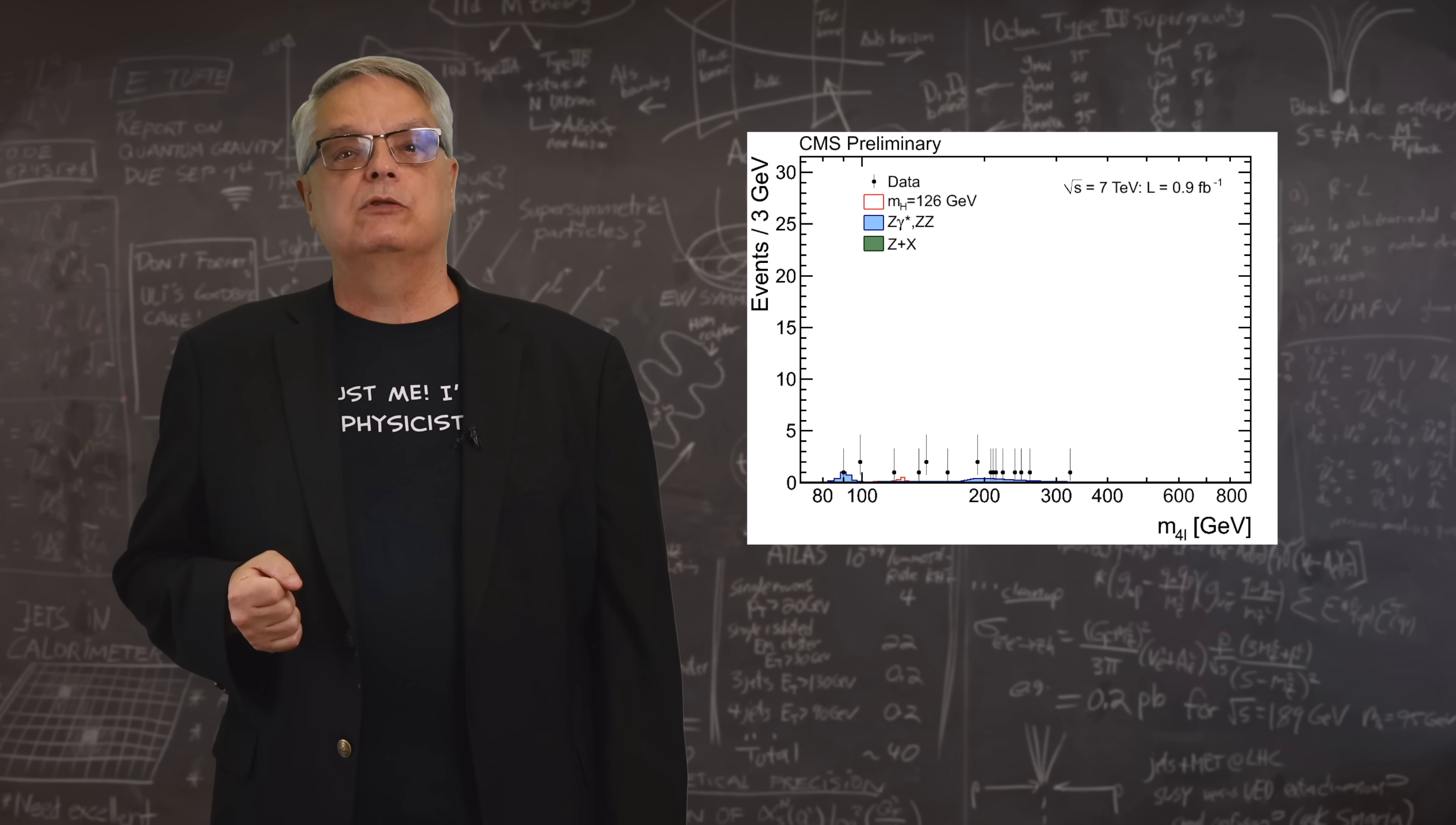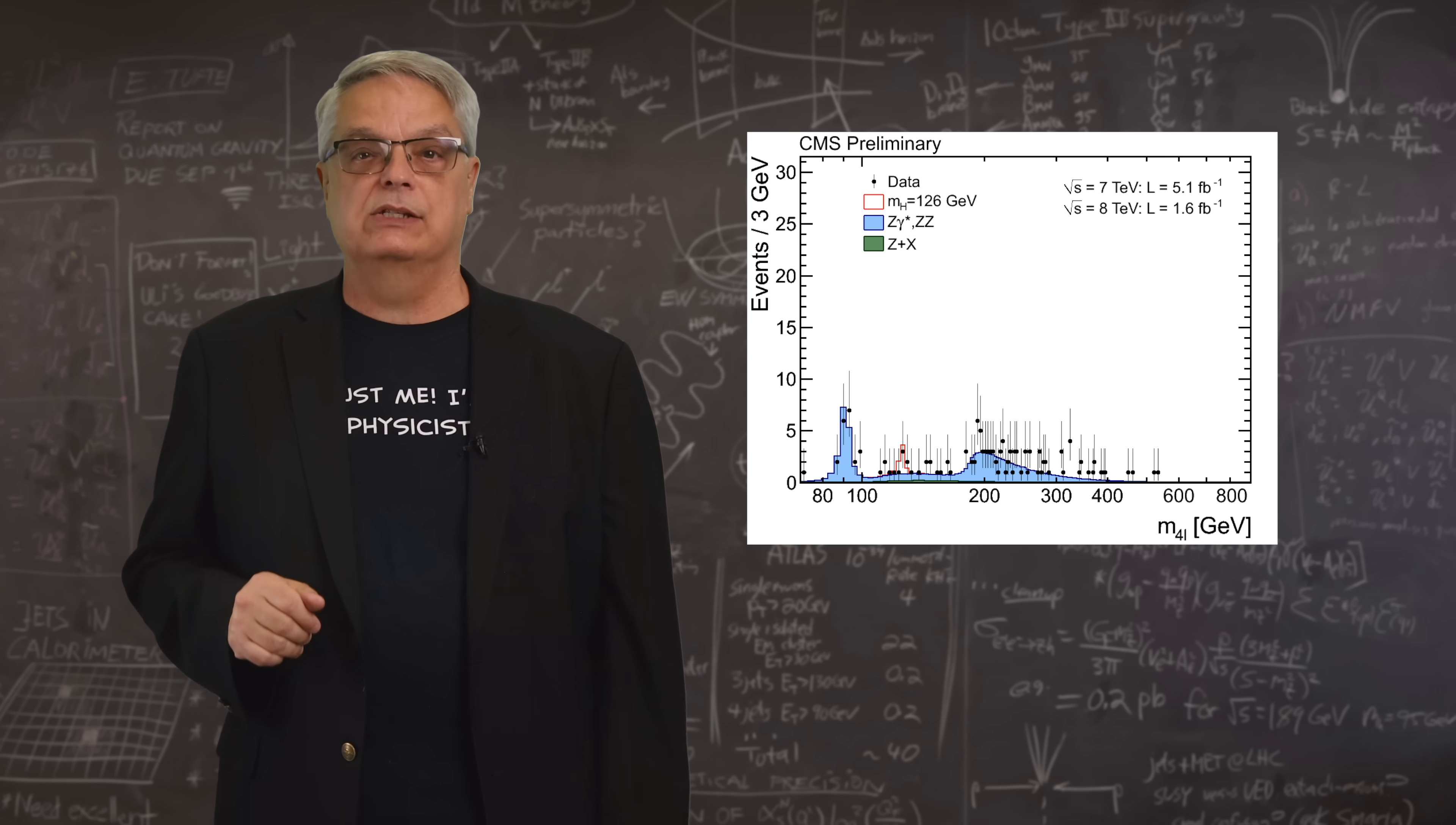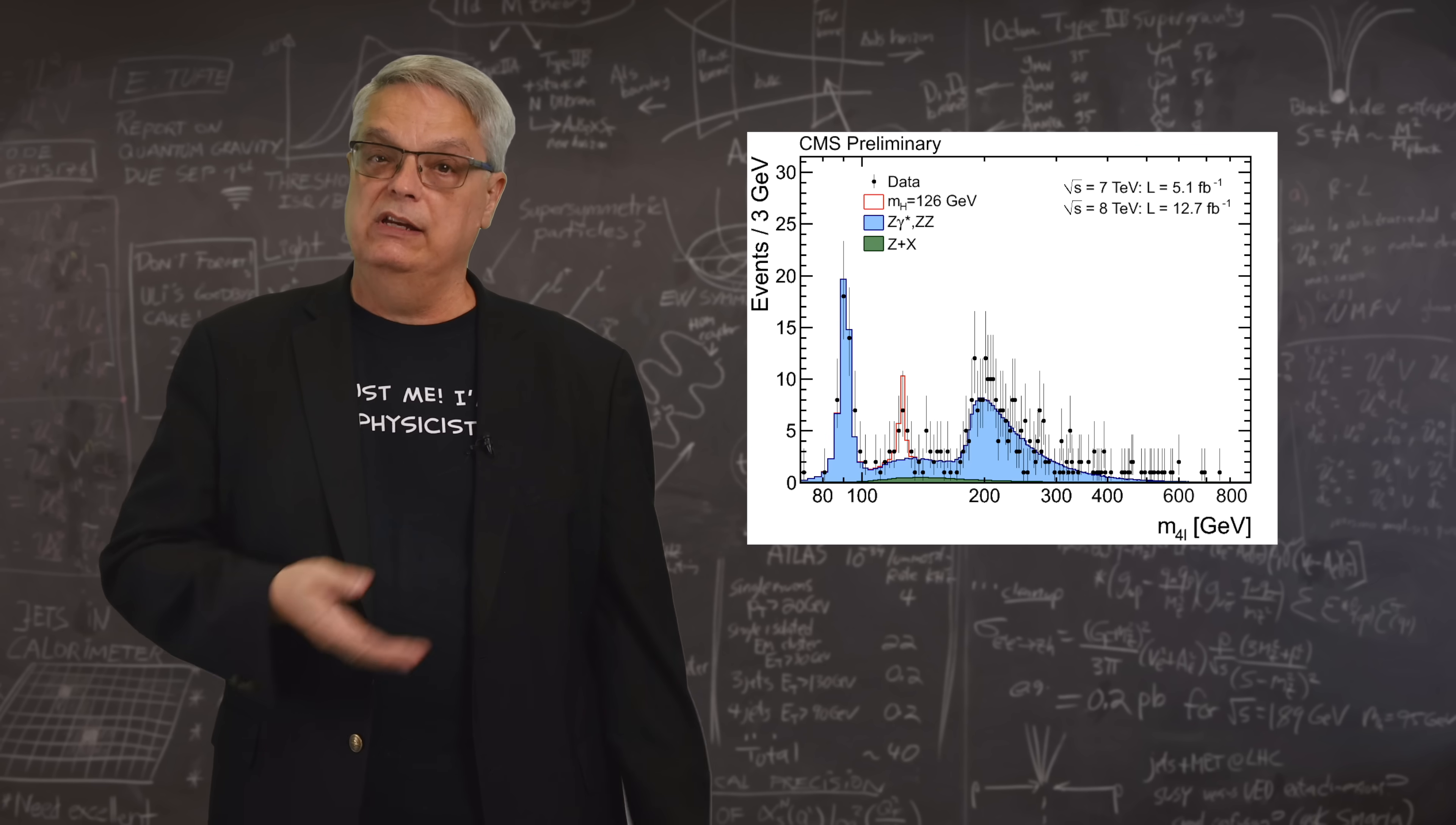This plot you see on the screen shows what the data looked like as it was being collected. The blue and green shaded areas is what we predicted to see if the Higgs boson didn't exist. The black dots are the data, and the red curve is the Higgs boson. We start out seeing no signal, but when enough data was collected, a little bump of data at a mass of 125 GeV is apparent.